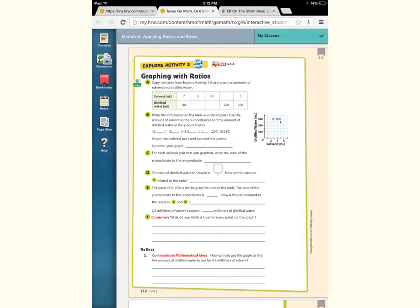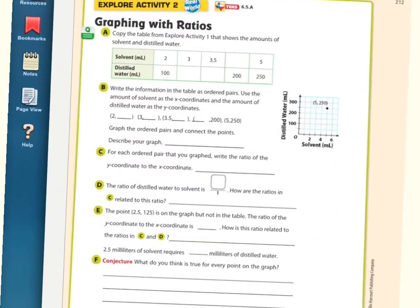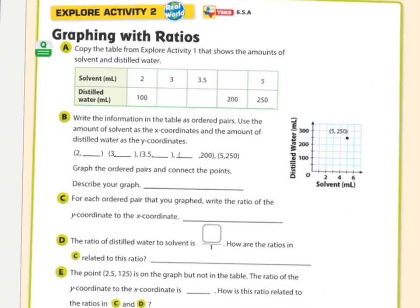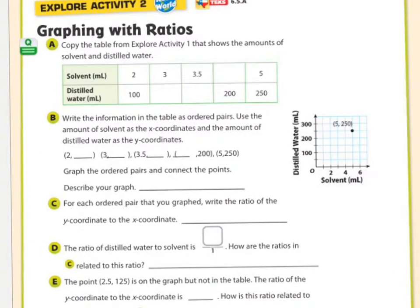Now we're going to graph with the ratios. We're using the same numbers over and over again. On this, it says copy the table. So I'm just going to very quickly put those numbers back in here. That was 150, 175, 4, and there you go.